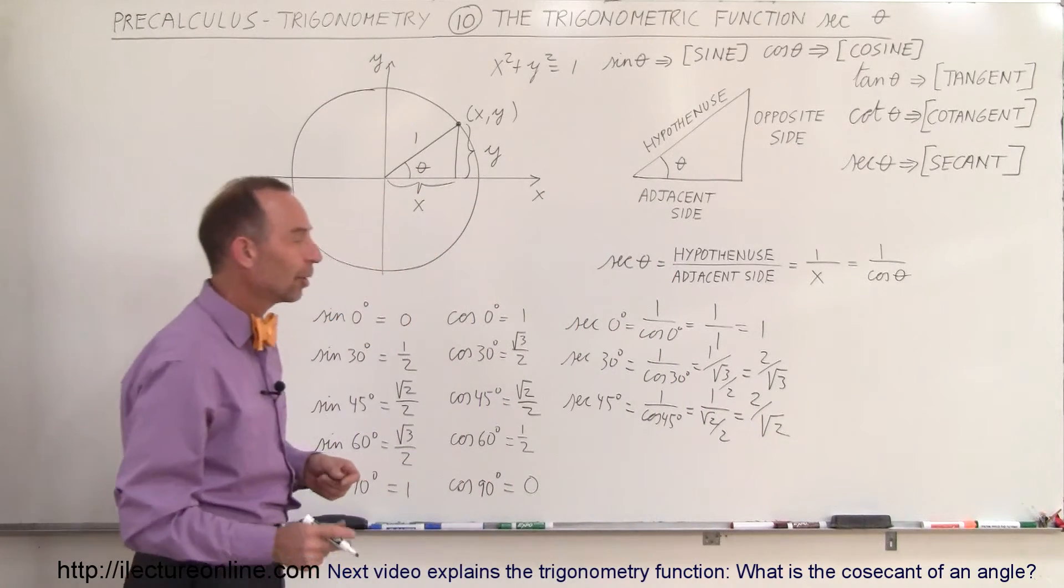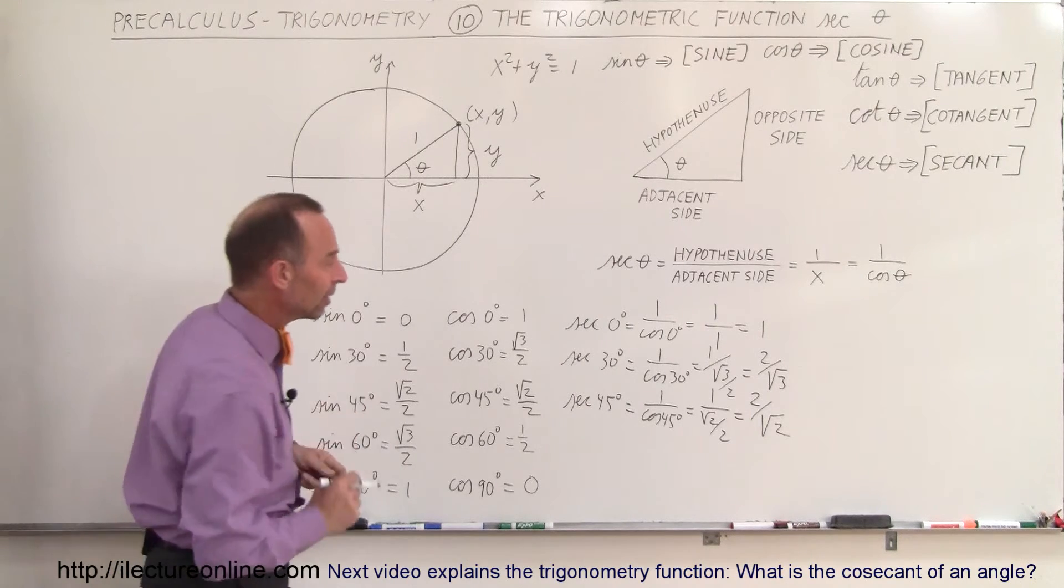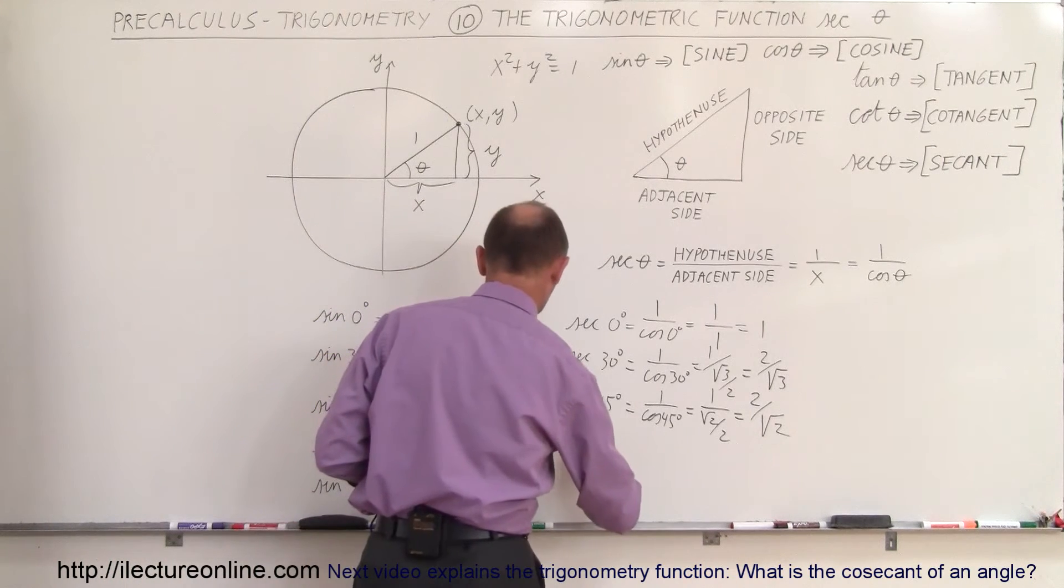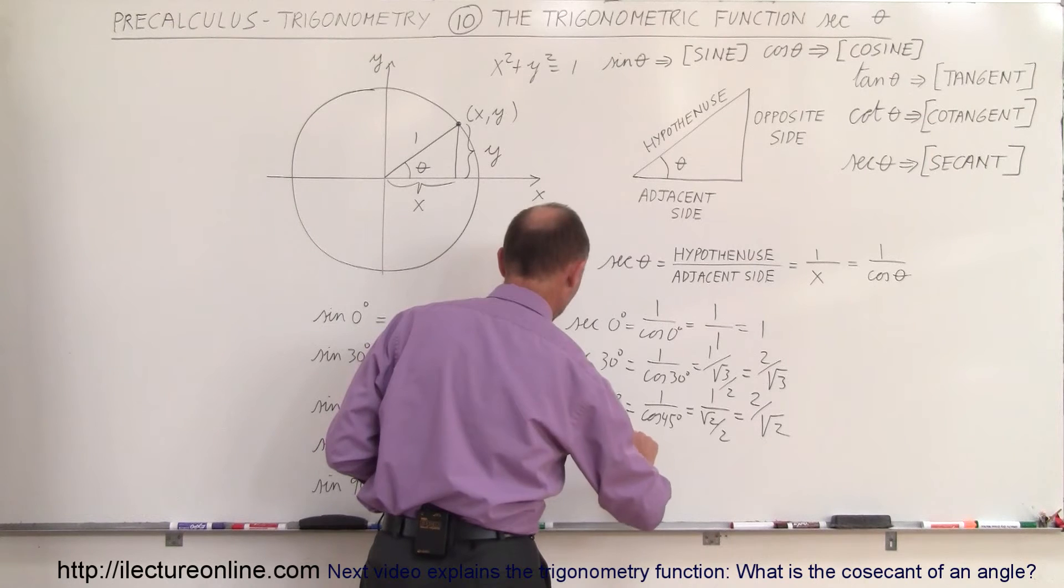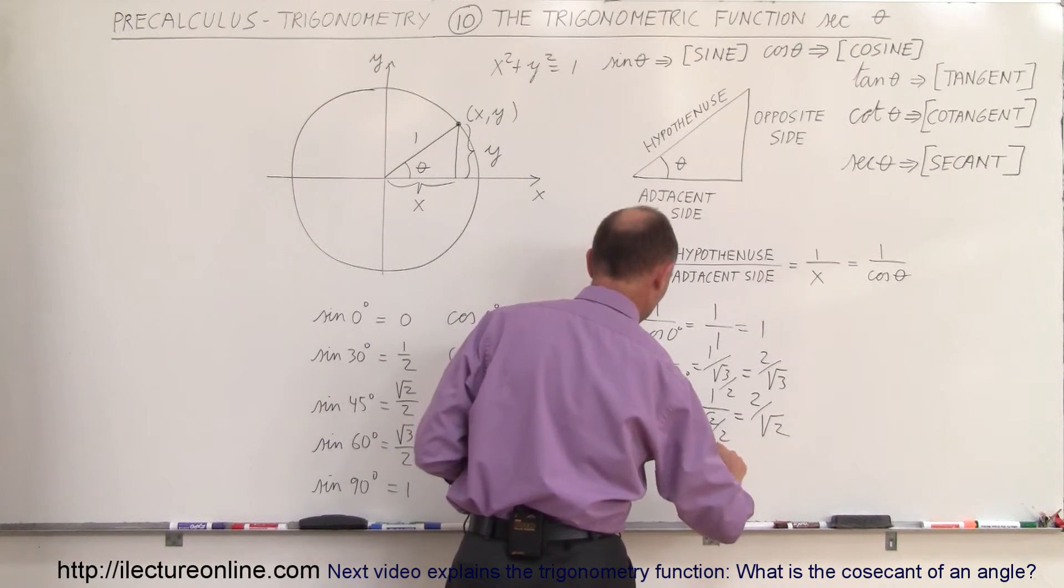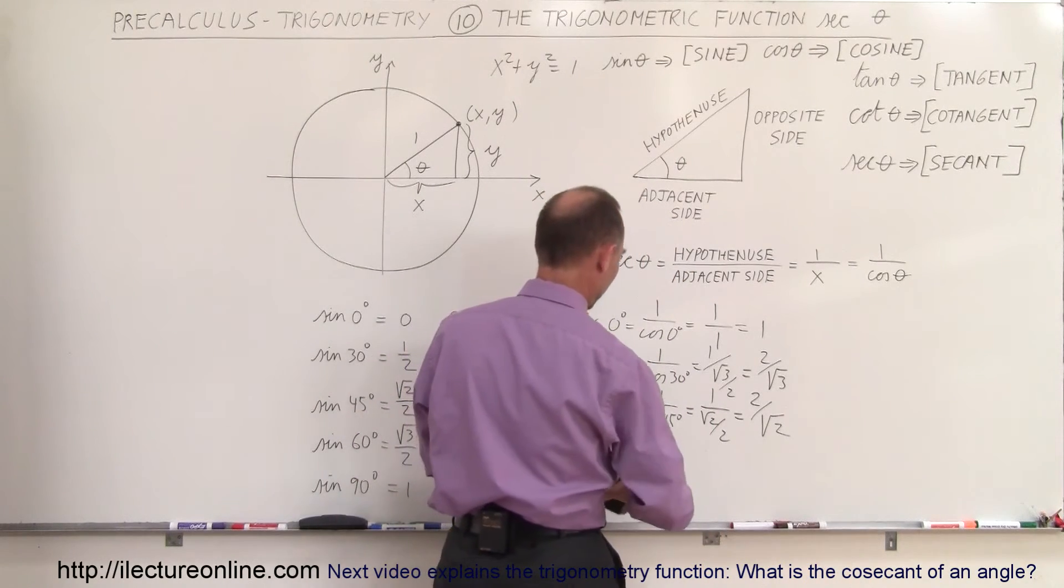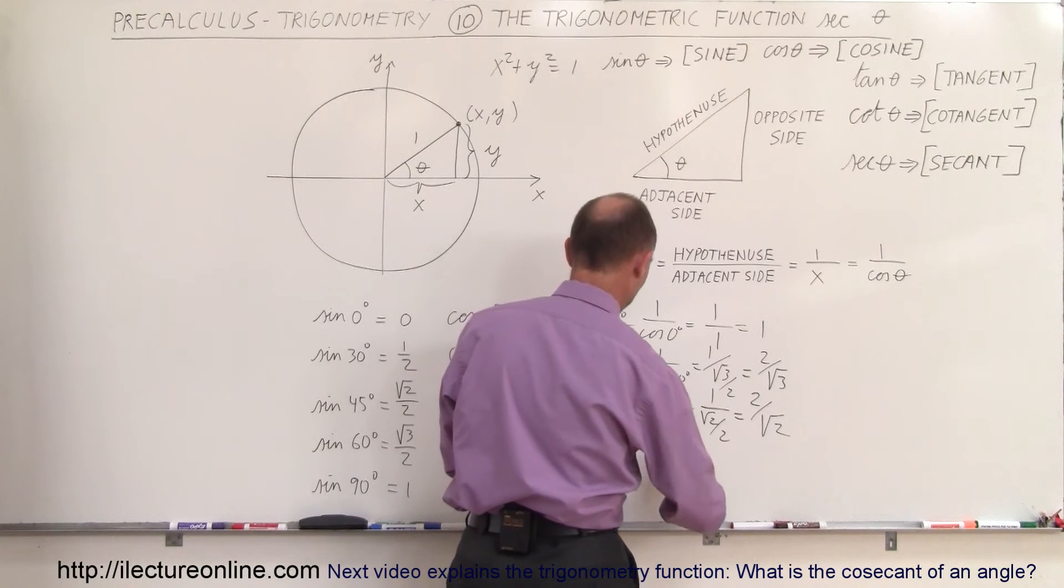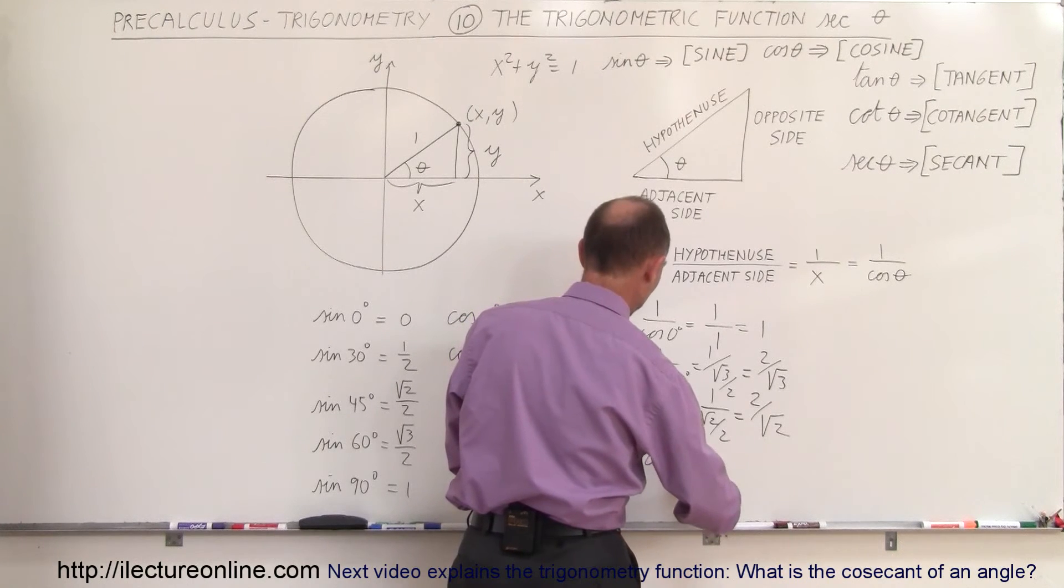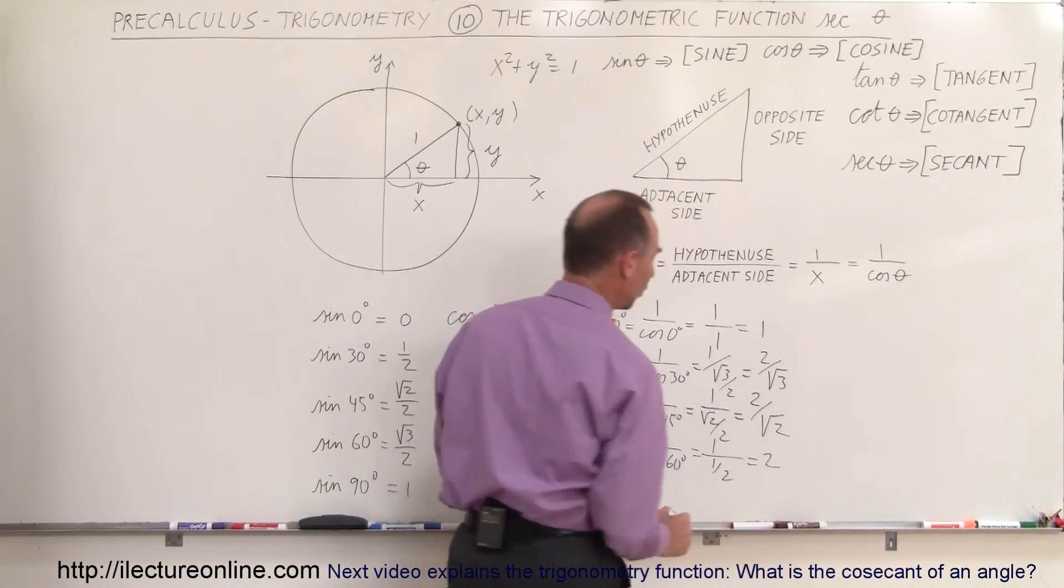So you can see that number gets to be 2 divided by the square root of 2. Now we have the secant of 60 degrees, which is equal to—oh, I skipped a step here. So, equal to 1 divided by the cosine of 60 degrees, which is 1 divided by 1 half, which is 2.